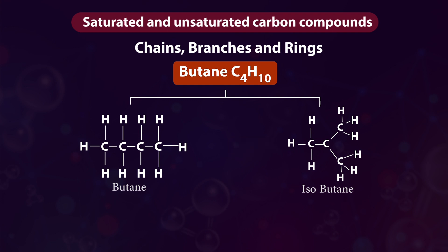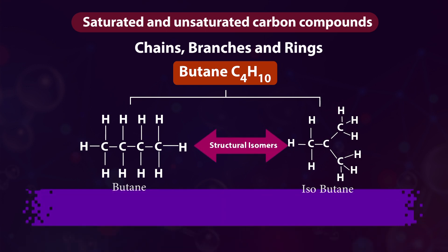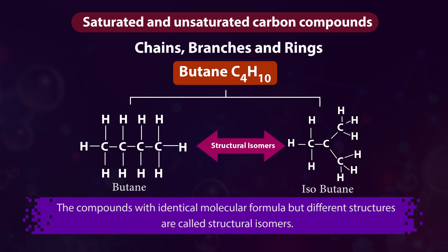Both structures satisfy the valency of carbon and hydrogen, and both have the same molecular formula. We can call these two compounds structural isomers — compounds with identical molecular formula but different structures.